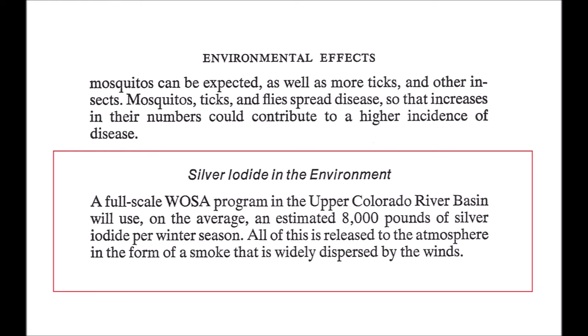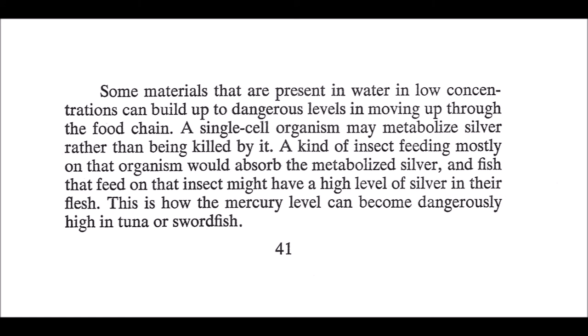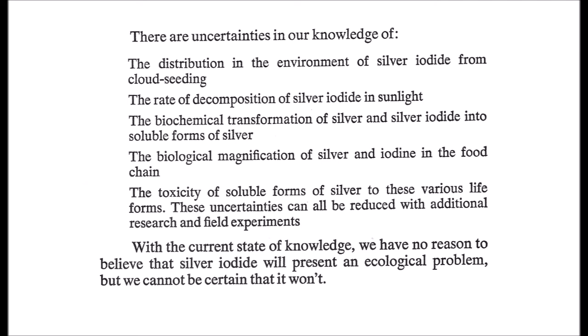All of this is released to the atmosphere in the form of a smoke that is widely dispersed by the winds — unpredictable, even by today's standards where we can watch what the wind is doing live, as it changes rapidly and can't be predicted. Some materials present in water at low concentrations can build up to dangerous levels moving up through the food chain. A single-cell organism may metabolize silver rather than being killed by it. An insect feeding mostly on that organism would absorb the metabolized silver, and fish feeding on that insect might have a high level of silver in their flesh — this is how mercury levels become dangerously high in tuna or swordfish. So 25 years into the technology being used, there are still uncertainties in our knowledge of the distribution of silver iodide in the environment, the rate of decomposition of silver iodide in sunlight, and the toxicity of soluble forms of silver to various life forms.